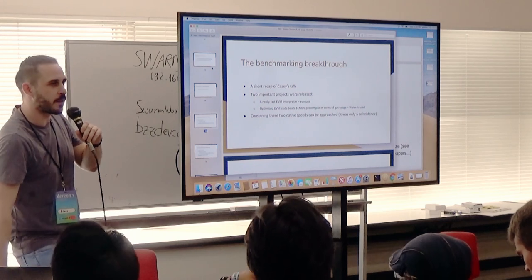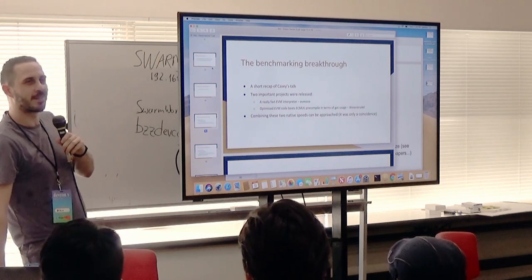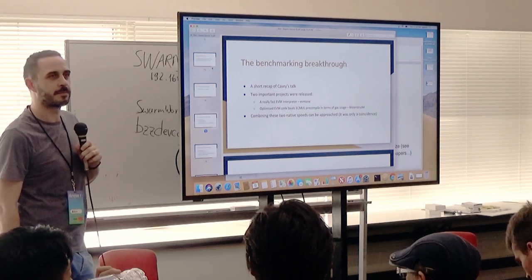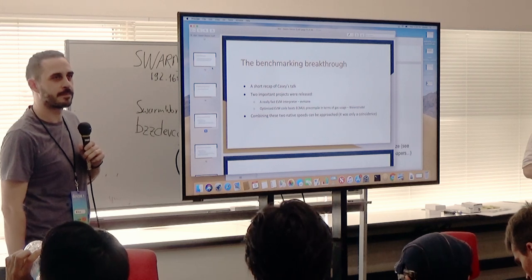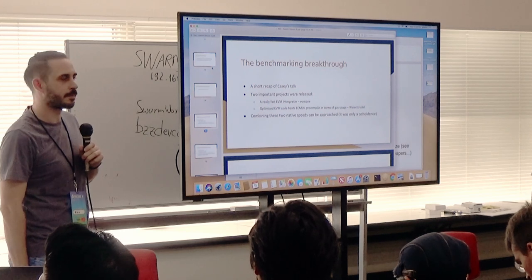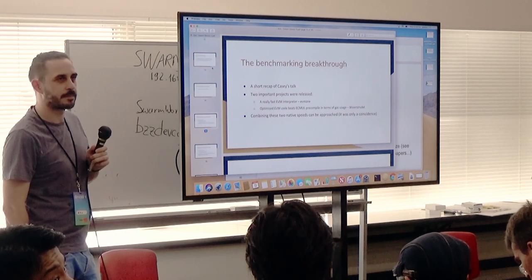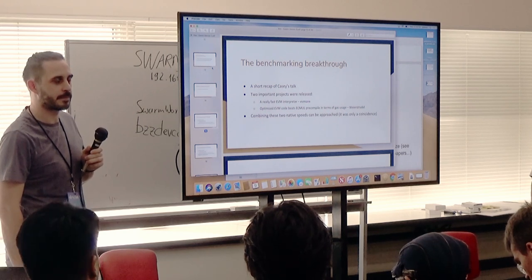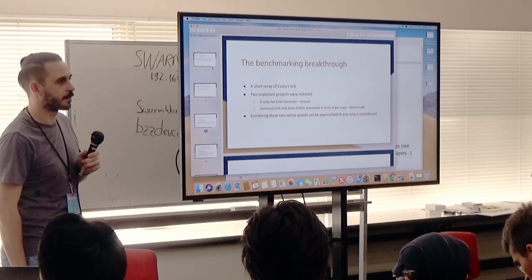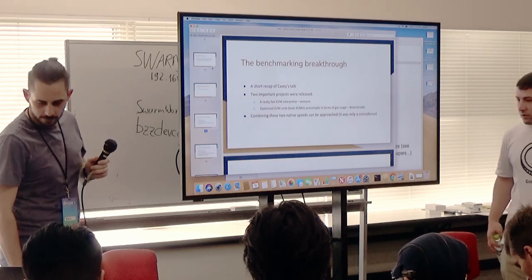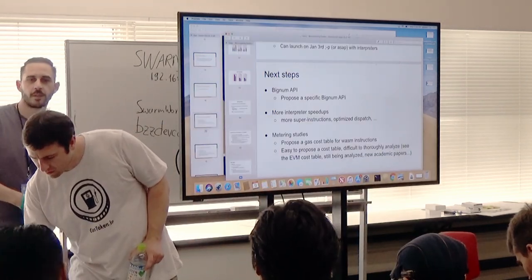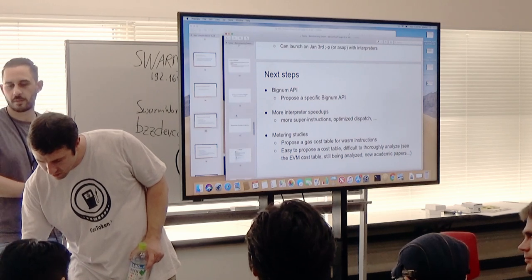Audience question: you mentioned two items regarding why EVM is slow — one is using 256-bit integers. Is there any benchmark around that? Does it also apply to EVM as a whole or blockchain generally?